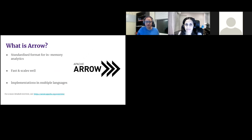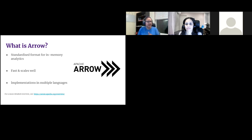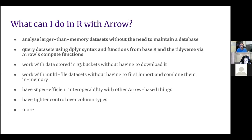The first question is: what is Arrow? This can get a little confusing because people use 'Arrow' to refer to the overall project, or to the actual R package. In general, Arrow is a standardized format for in-memory analytics, and there are implementations of this in loads of different programming languages. At a high level it's for in-memory analytics — it's fast and it scales well. The idea is being able to do analytics on data that is bigger than you can fit in memory without having to load it all into memory.